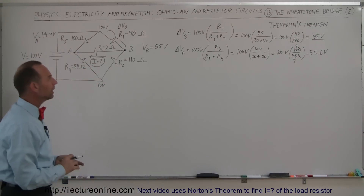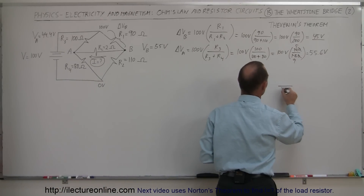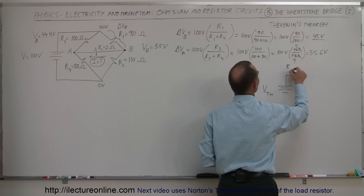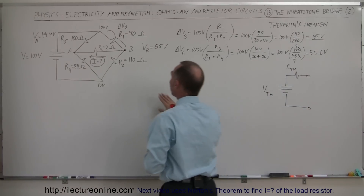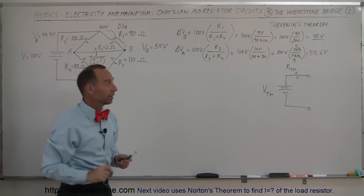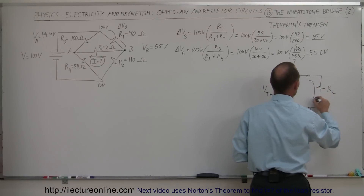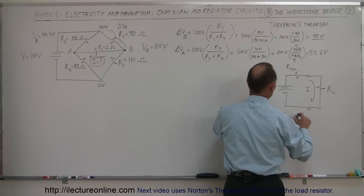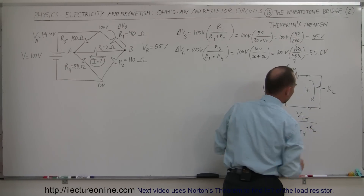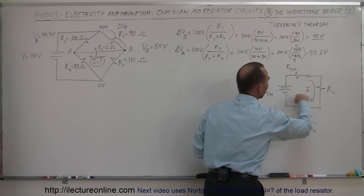What we need to do is make this circuit look like an equivalent Thevenin circuit — one with a single battery with potential V_Thevenin and a single resistor R_Thevenin. This whole bridge circuit, not including R_L, will be replaced by this equivalent series circuit. We then simply attach the load resistor R_L to it, and find the current I through R_L using I equals V_Thevenin divided by (R_Thevenin plus R_L), where R_L is a 2 ohm resistor.